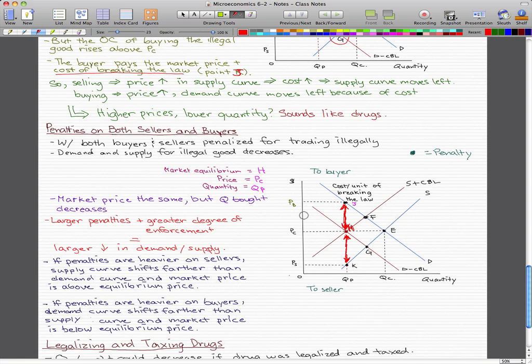The PC is equal to price like before, but the quantity now has decreased to QP. The market price is the same, but the quantity bought decreased.